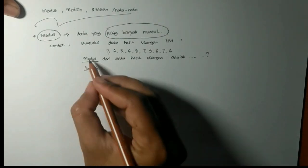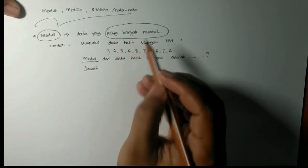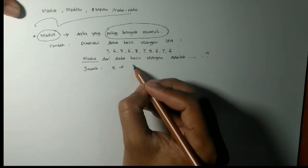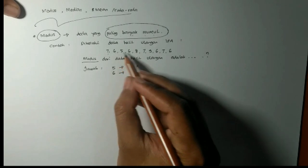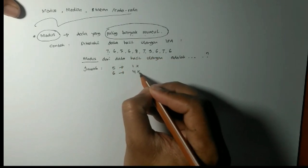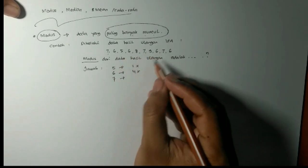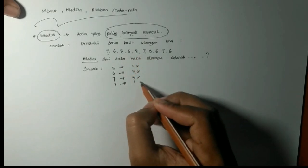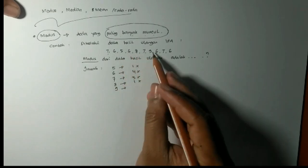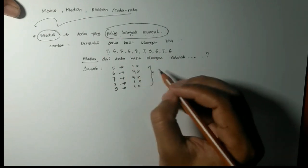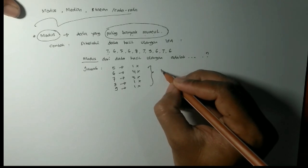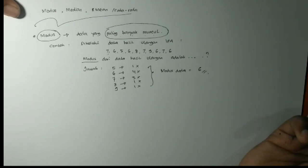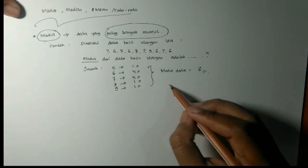Modus adalah data yang paling banyak muncul. Jadi kita hitung berapa munculnya yang paling banyak, yang mana. Misalkan ini 5 muncul 1 kali, 6 kita hitung muncul 1, 2, 3, 4 kali. 7 muncul 3 kali, 8 muncul 1 kali, 9 muncul 1 kali. Nah, kita ketahui berarti yang paling banyak ini yang paling banyak muncul 6 ya, yaitu 4 kali. Jadi modusnya ya 6 itu cukup mudah. Jadi modus itu yang paling banyak muncul.